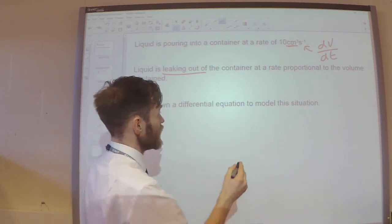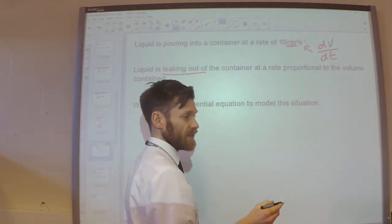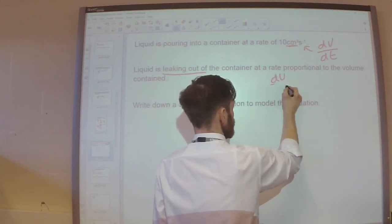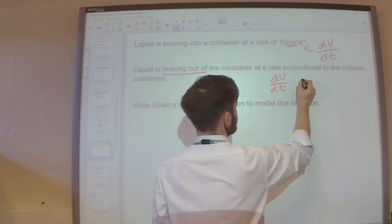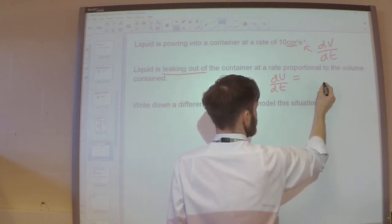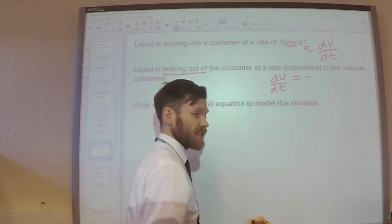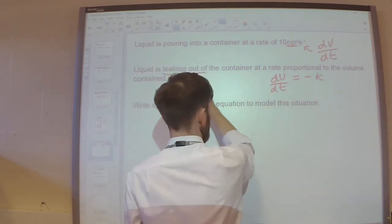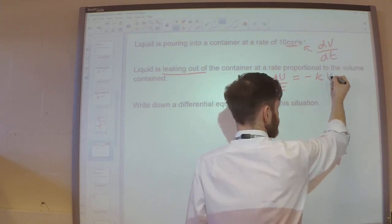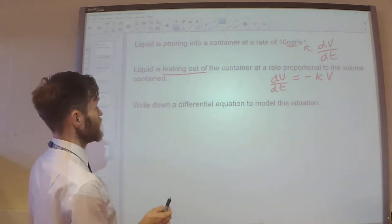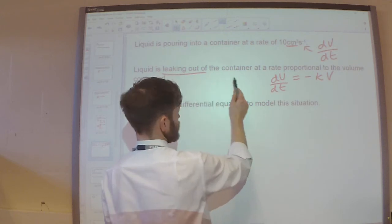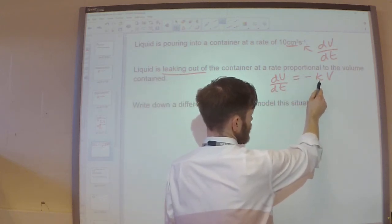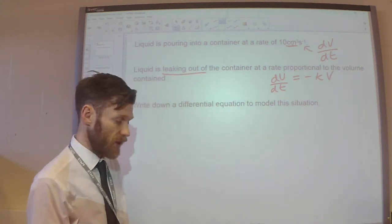But liquid is also leaking out of the container at a rate that's proportional to the volume contained. So, that's going to be dv by dt is proportional. So, equals minus, because the liquid is leaking out, k, times the proportion of the volume contained. So, the liquid is leaking out, so minus, there's a rate of proportional, so equals k, times the volume.